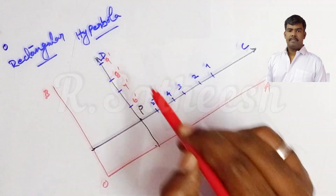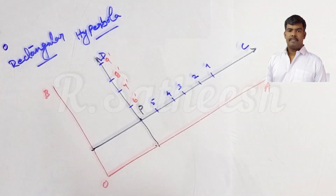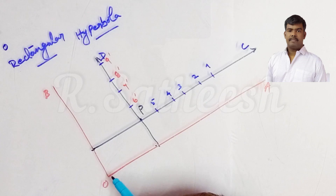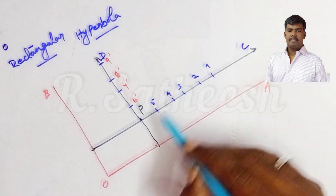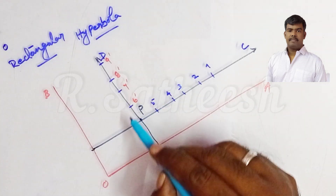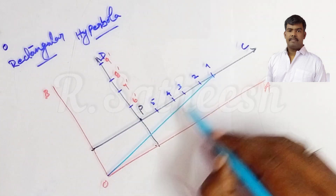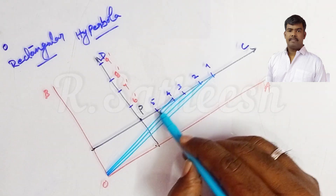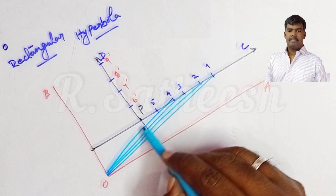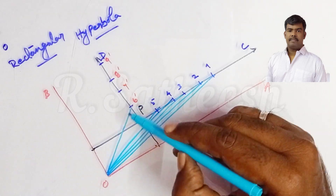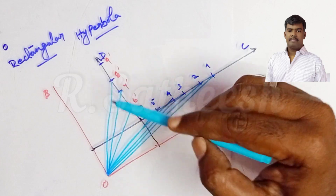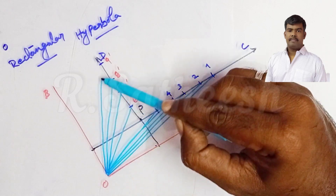After assigning the points, join all points to origin O: draw lines O1, O2, O3, O4, O5, and O6-dash, O7-dash, O8-dash, O9-dash like this.